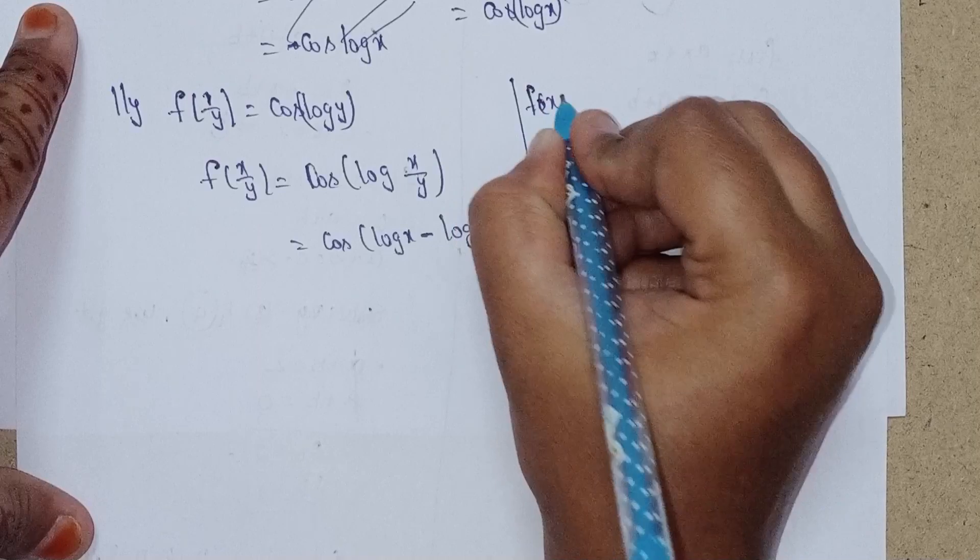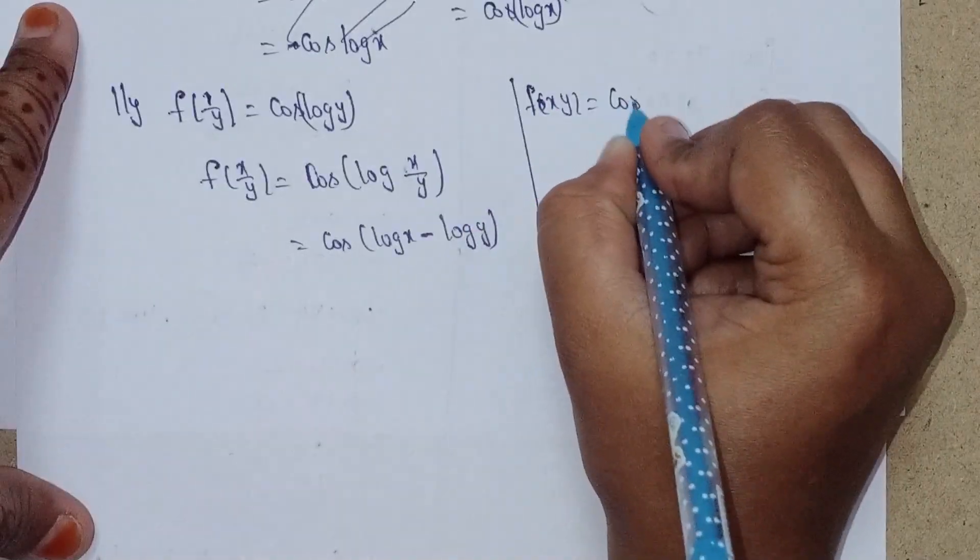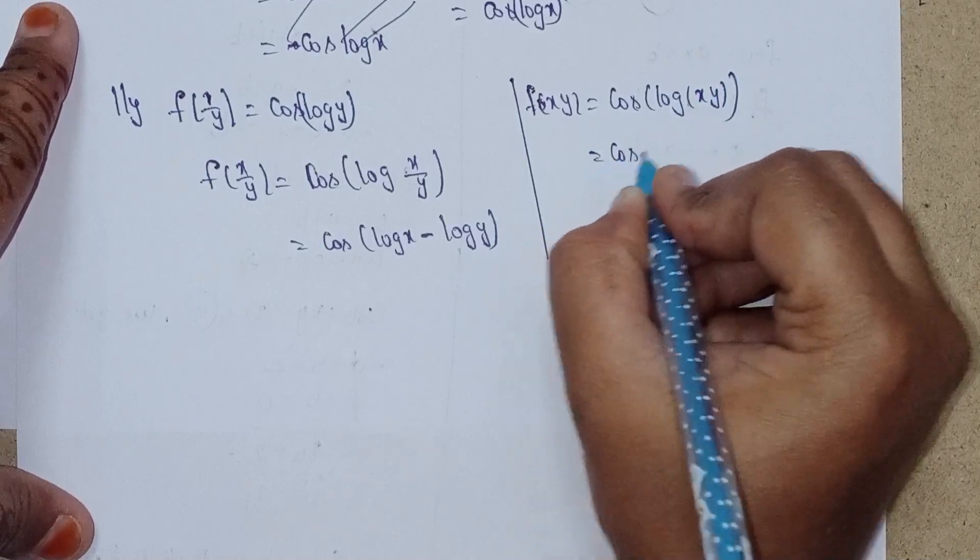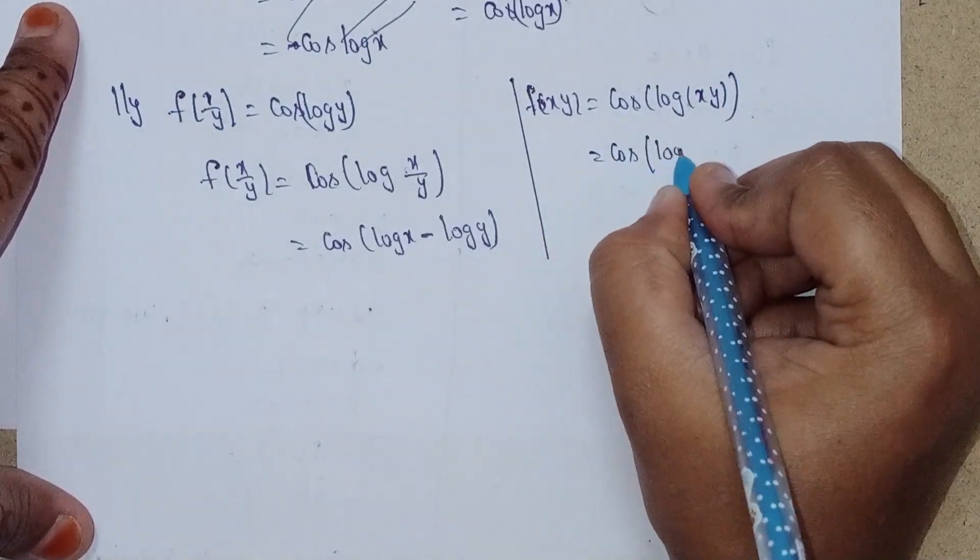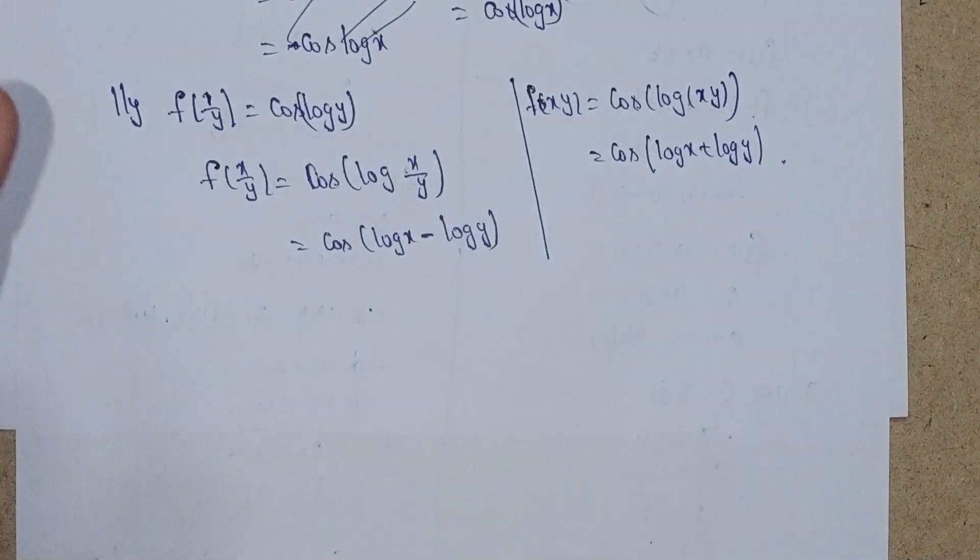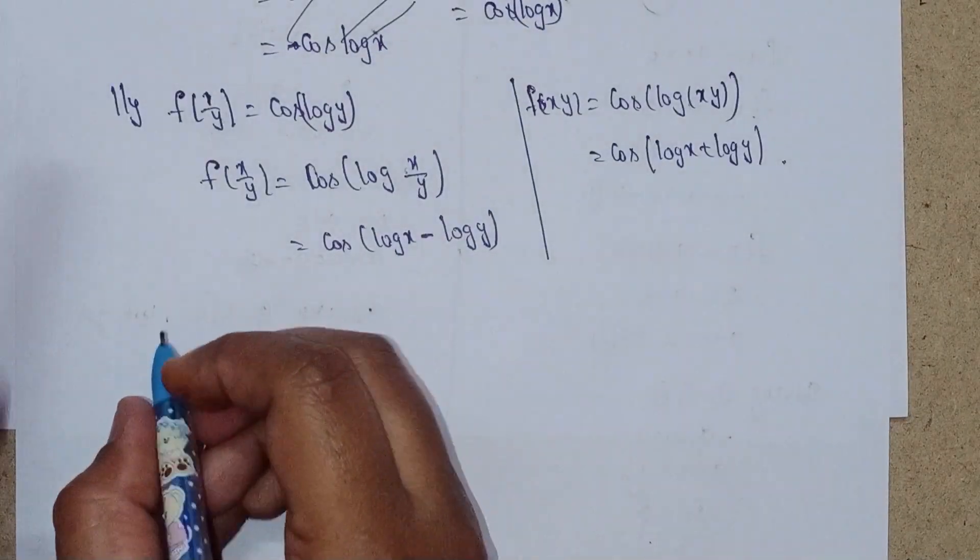For f(xy), we get cos(log(xy)) = cos(log x + log y). Now we'll evaluate the left-hand side.